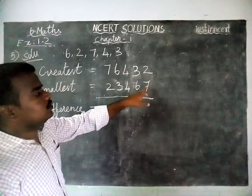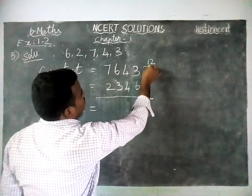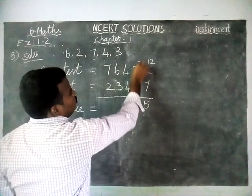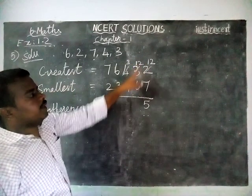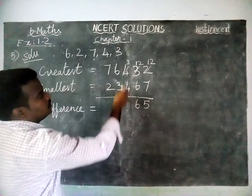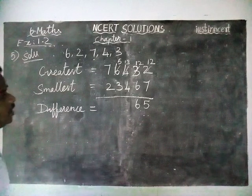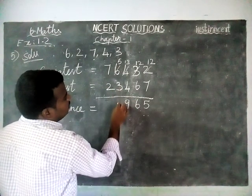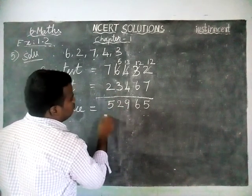We cannot subtract 2 from 7, so we are going to borrow from here. This becomes 12. 12 minus 7 is equal to 5. Now this is 2 — we borrow again, making it 12. 12 minus 6 is equal to 6. Now this is 3 — we cannot subtract 4, so we borrow, making it 13. 13 minus 4 is equal to 9. Then 5 minus 3 is equal to 2, and 7 minus 2 is equal to 5.